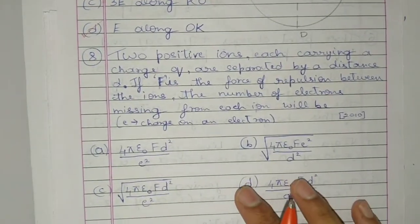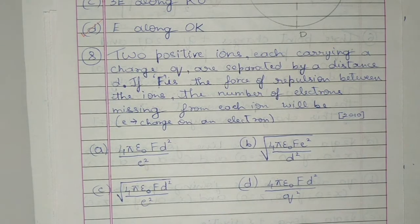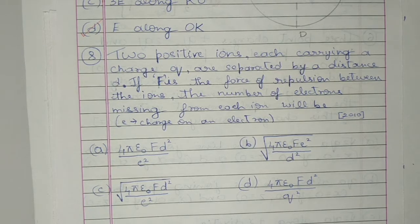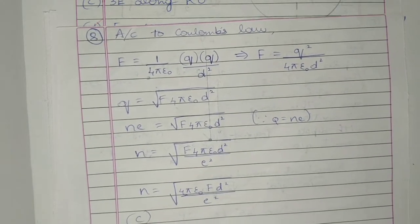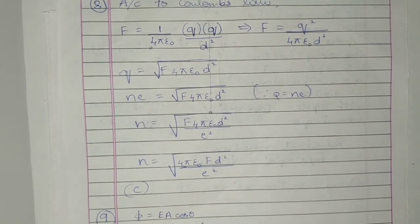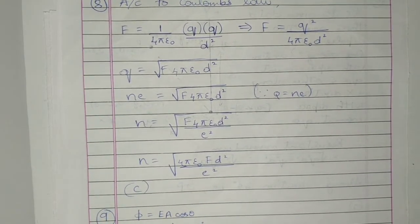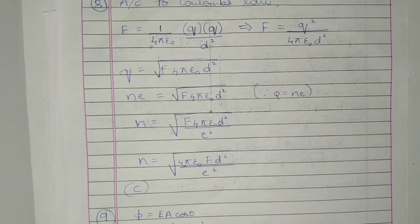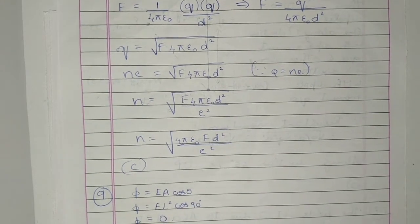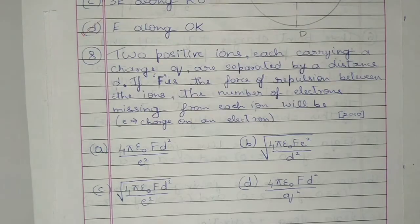Question 8: Two positive ions, each carrying a charge Q, are separated by a distance D. If F is the force of repulsion between these ions, the number of electrons missing from each ion will be — according to Coulomb's law, F = KQ1Q2/R², where R is D. This gives F = Q²/(4πε₀D²), and Q = √(F × 4πε₀D²). We also know Q = Ne. Substituting, we get N = √(4πε₀FD²/e²). Which gives us option C.